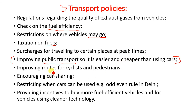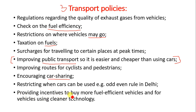Further transport measures include improving routes for cyclists and pedestrians, encouraging car sharing between families, restricting when cars can be used such as odd-even rules like the one in Delhi, and providing incentives to buy more fuel-efficient vehicles and vehicles using cleaner technology.